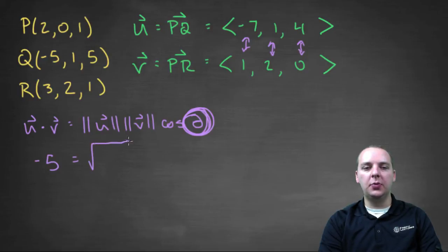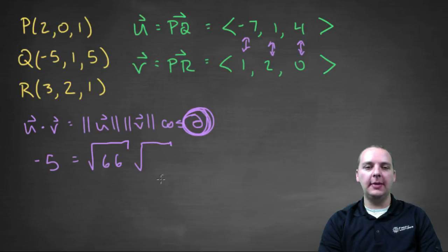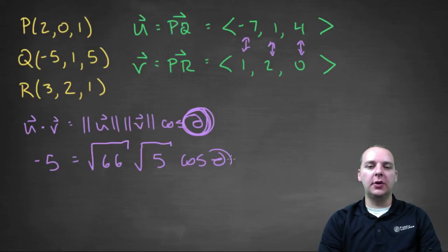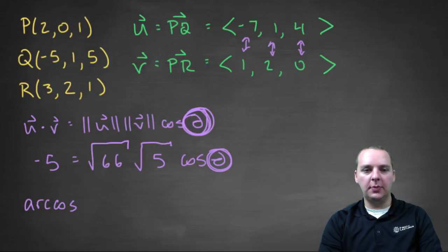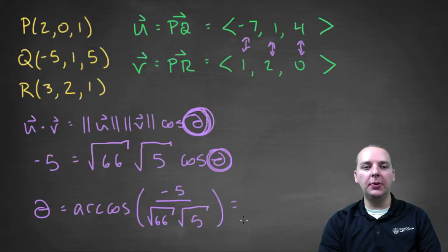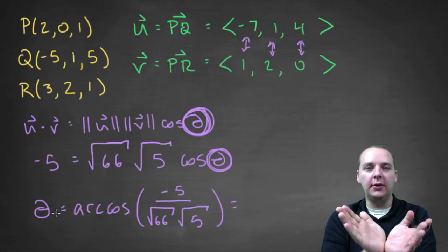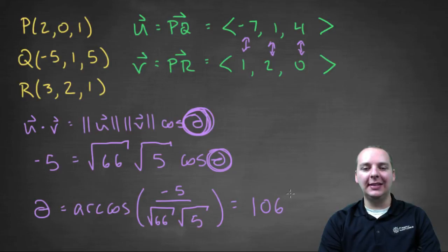The magnitude of U would be the square root of sixty-six, and the magnitude of V would be the square root of five. To solve for theta, we divide those two radicals to the left-hand side, then take the arc cosine of both sides. So theta equals the arc cosine of negative five divided by root sixty-six times root five. Make sure your calculator is in degree mode — this should give you an answer between zero and one hundred eighty degrees. I went ahead and punched this in and got approximately one hundred and six degrees.